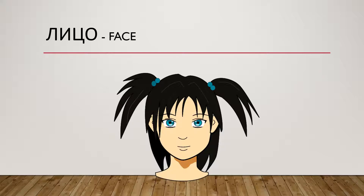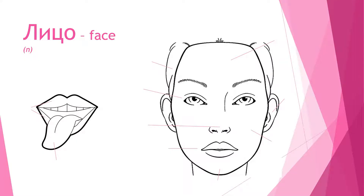First, we're gonna focus on the face — лицо — and all the different parts of the face. So here's a little diagram, and I'm gonna tell you each noun and its gender, although you should already be able to guess most of them because of our rules. Remember: if it ends in a consonant, it's probably a male noun. If it ends in A, probably female, and if it ends in O, probably neutral.